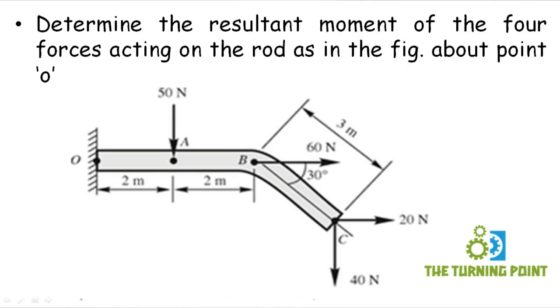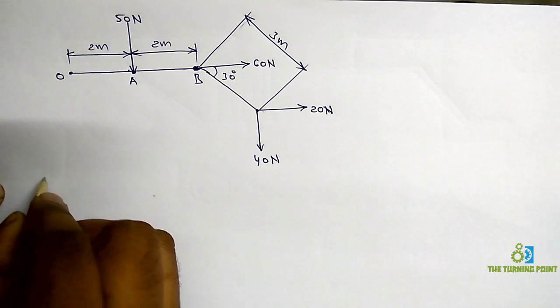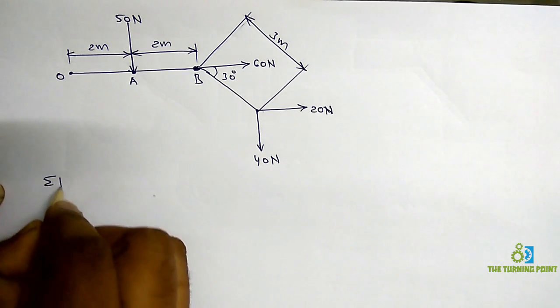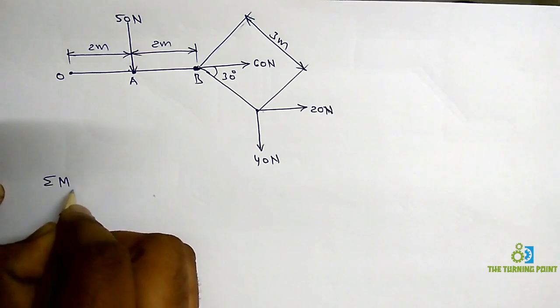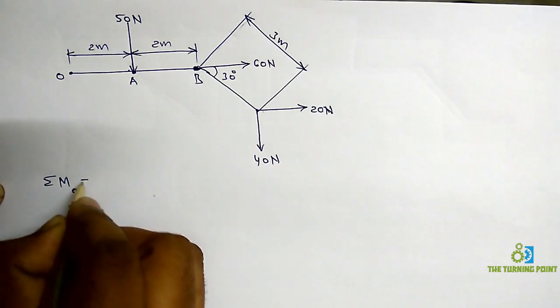Determine the resultant moment of the four forces acting on the rod as shown in the figure about the point O. I want to calculate the moment about O, that is sigma MO.